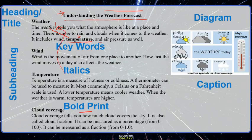These are the subheadings — they are also in bold print: weather, wind, temperature, cloud coverage. They help you predict that each paragraph talks about what the subheading says. So this paragraph talks about the wind, this paragraph talks about the temperature, and this paragraph covers cloud coverage.